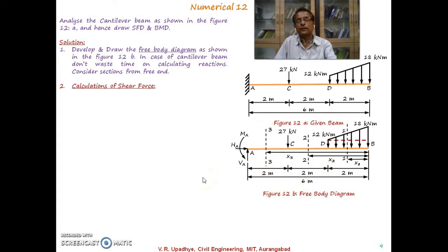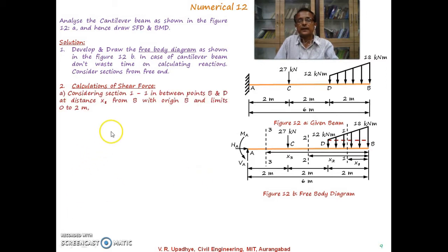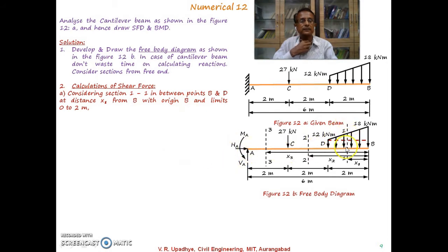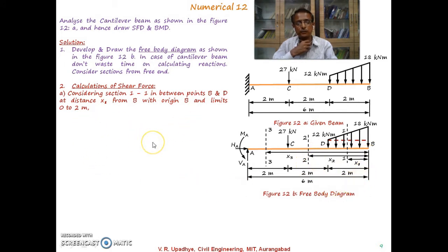Now let us go for calculations of shear force. Considering section 1-1 in between points B and D at a distance x1 from B, with B as the origin, the limits become 0 to 2 meters — since at B x1 equals 0, and at D x1 equals 2 meters.